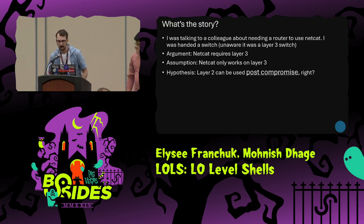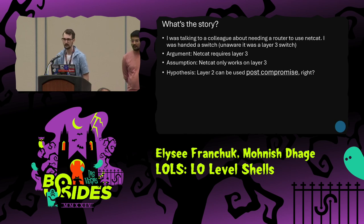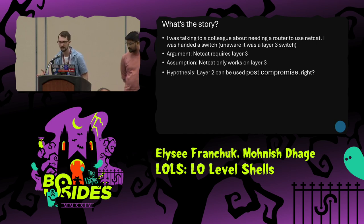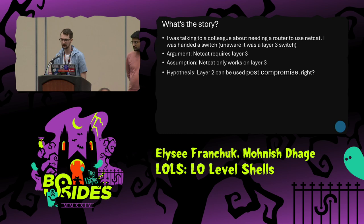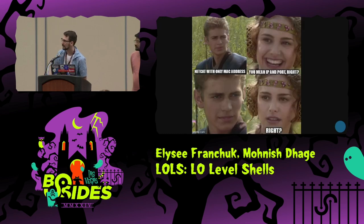So, what's the story? Basically, the story is that I was trying to get a netcat shell, and my colleague at the time gave me a switch. I was unaware that the switch was a Layer 3 switch, and I'm like, well, you need an IP, right? Well, that's only an assumption. The hypothesis is that Layer 2 can be used for a netcat shell, but this would need to be post-compromise. So how exactly is that going to work? We made this meme for you to kind of explain it.